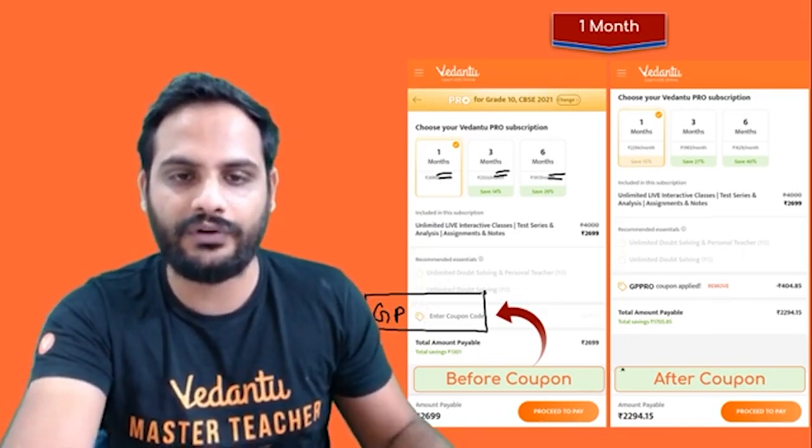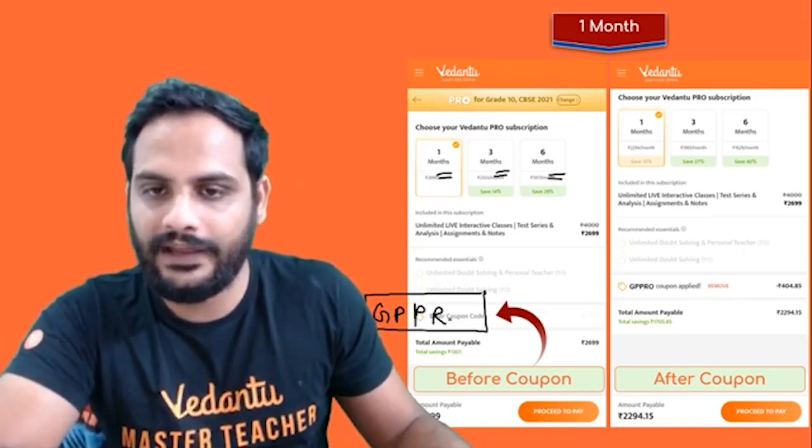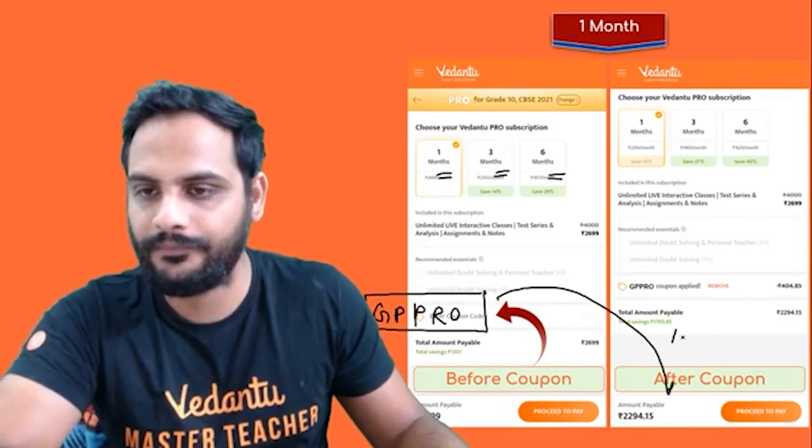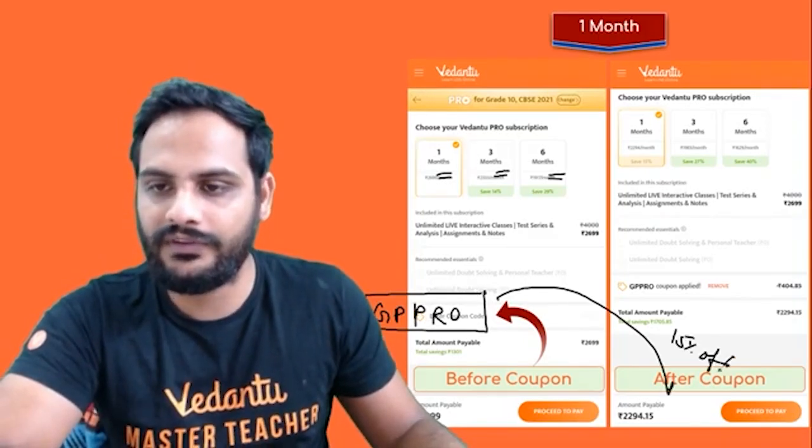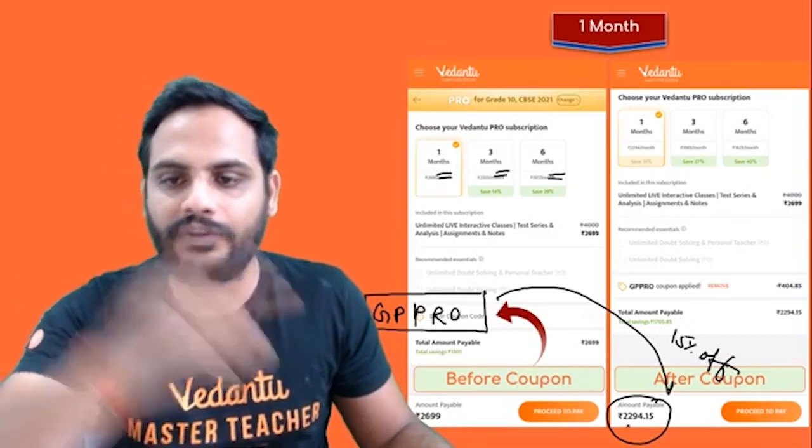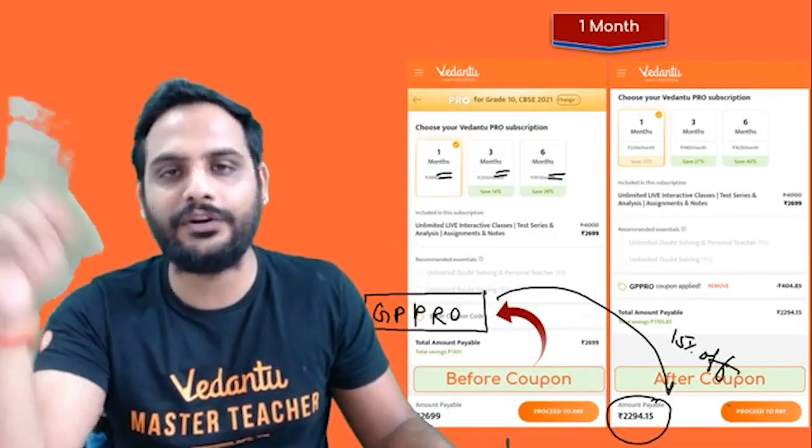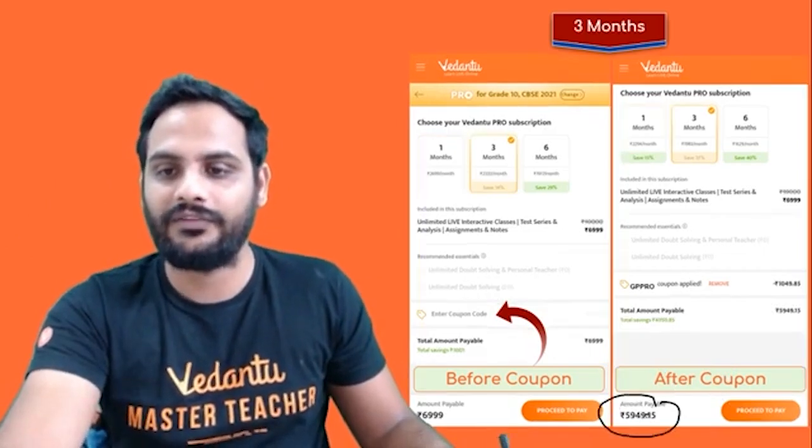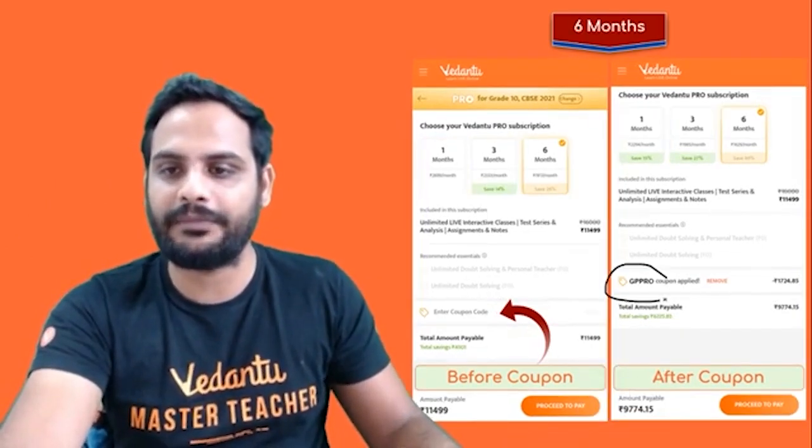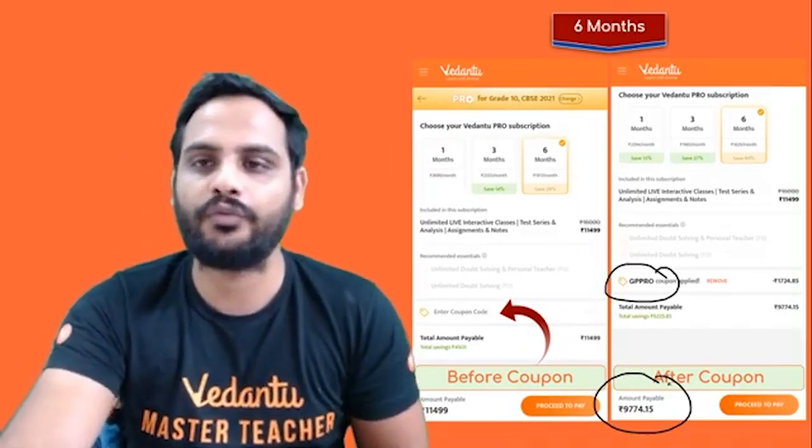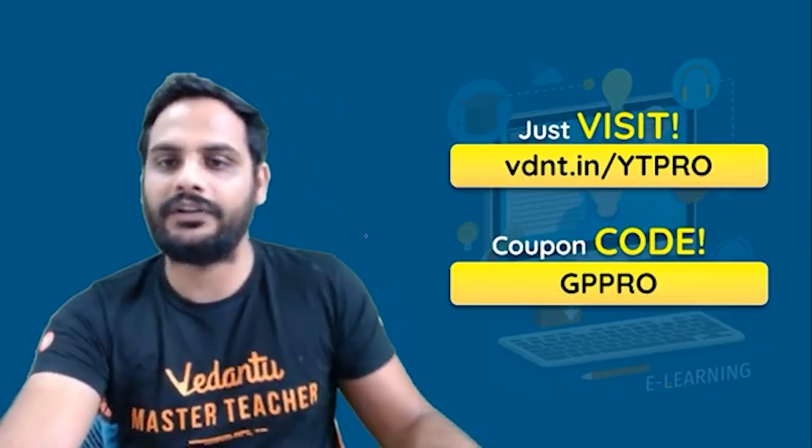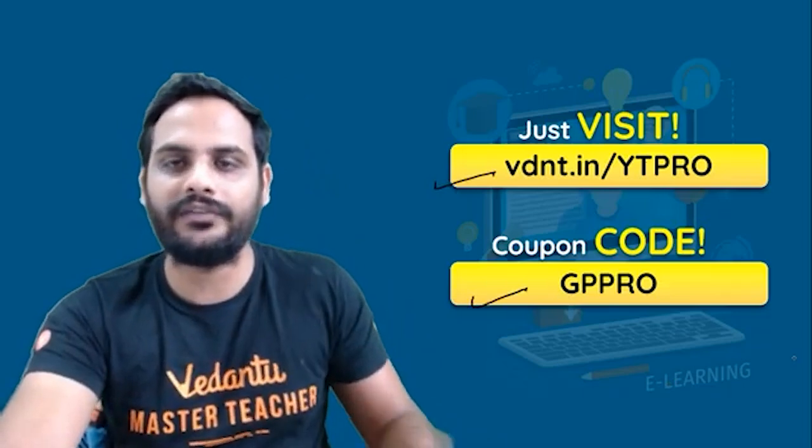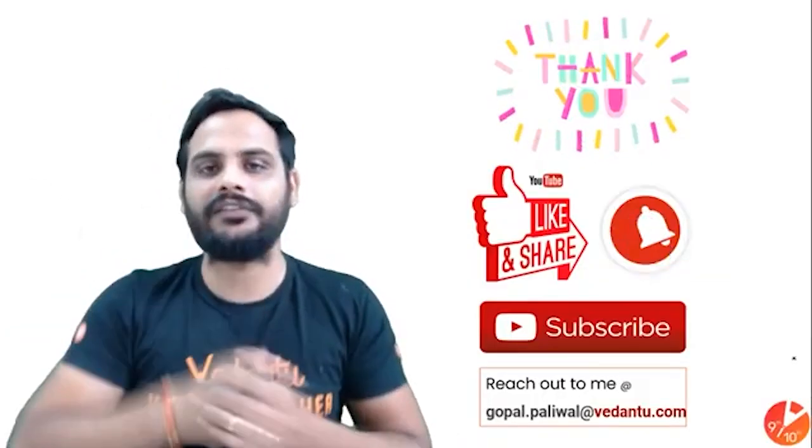If you apply the coupon code GP PRO you will get 15% off. This is the one month price. Now for the six months price, it is not like this times six, it is way less than that. Everywhere this coupon will be applicable GP PRO. The link is here, the code is here.